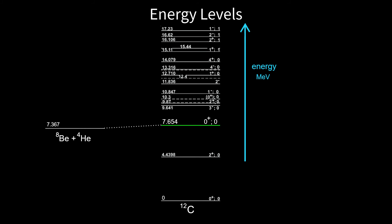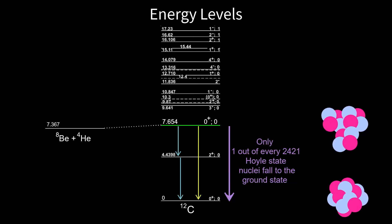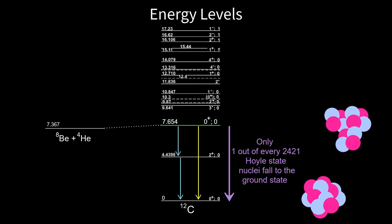The Hoyle excited state of carbon is more like a loose bunch of three alpha particles than a fully merged ground state carbon nucleus. The great majority of excited Hoyle state carbons fall apart again into beryllium and helium. About 1 in 2,400 Hoyle state carbons fully merge into carbon-12, emitting huge amounts of energy.